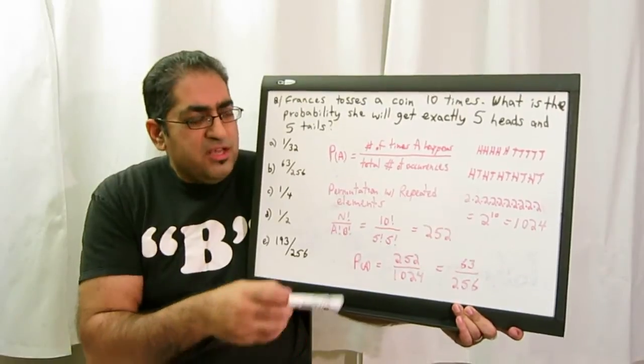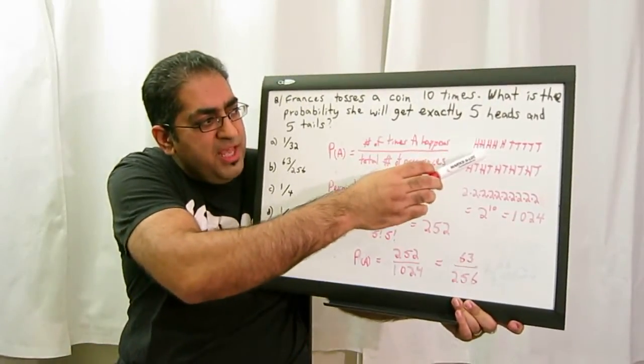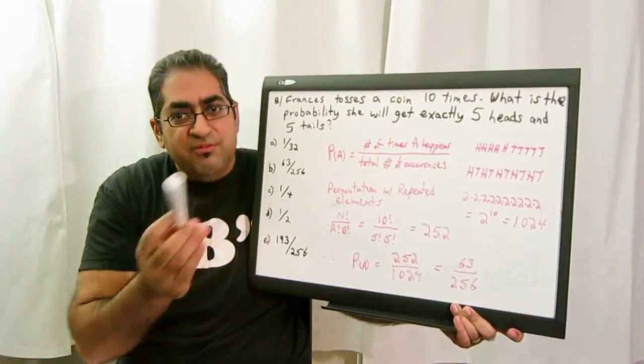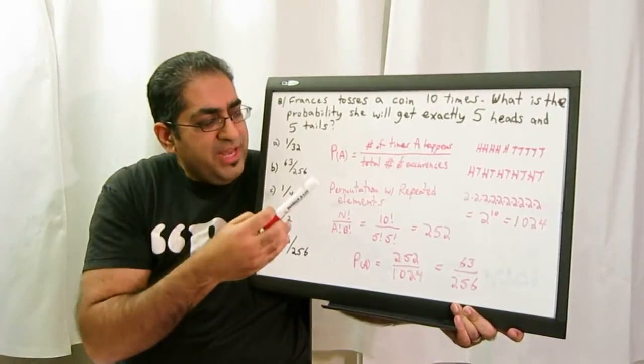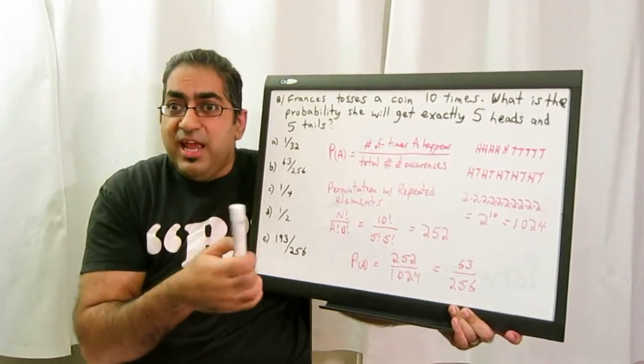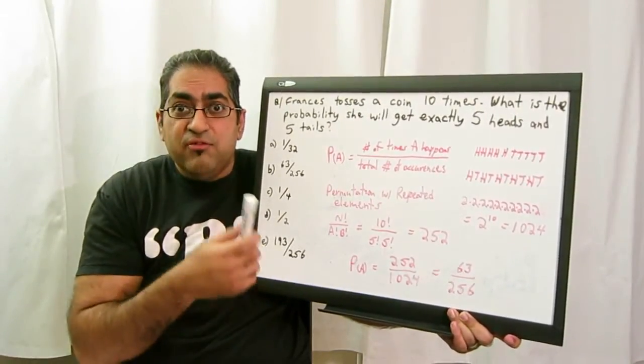The reason why it's hard is because she tosses it ten times, but then we have so many different possible configurations. You could have five heads and five tails. You could have HT, HT, HT, or you could have HHT and HTT. It gets really complicated. There's actually a lot of different probabilities.